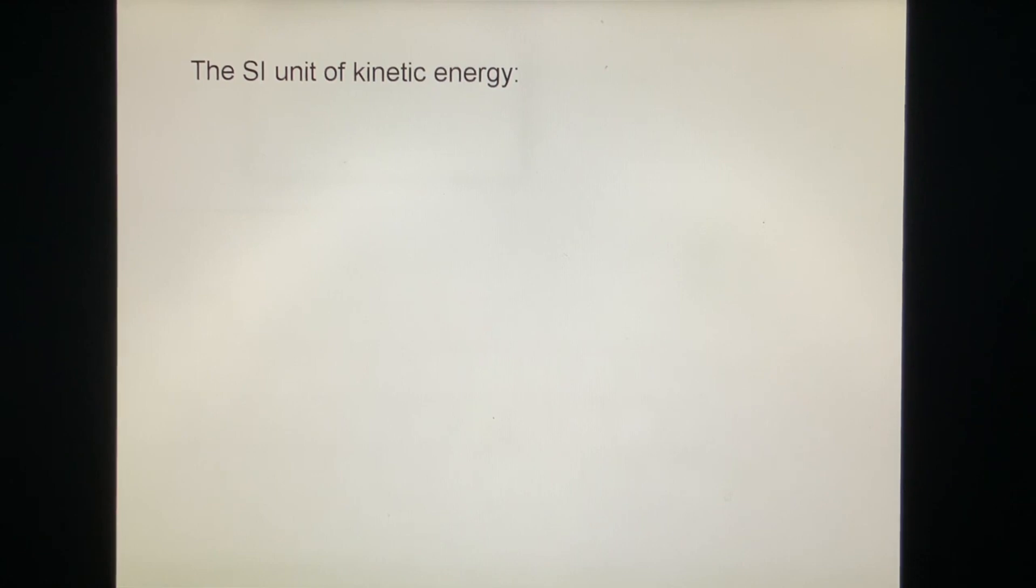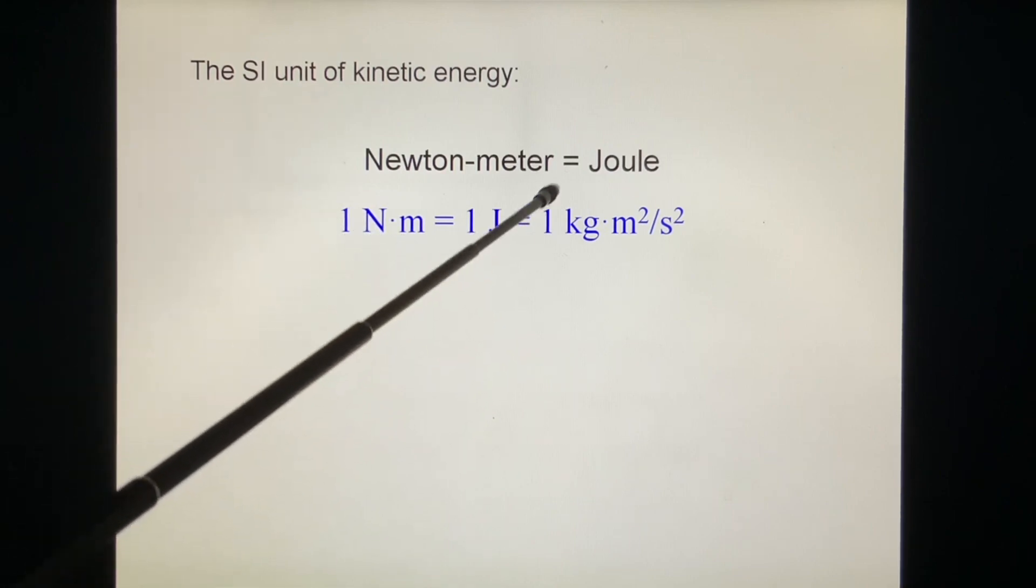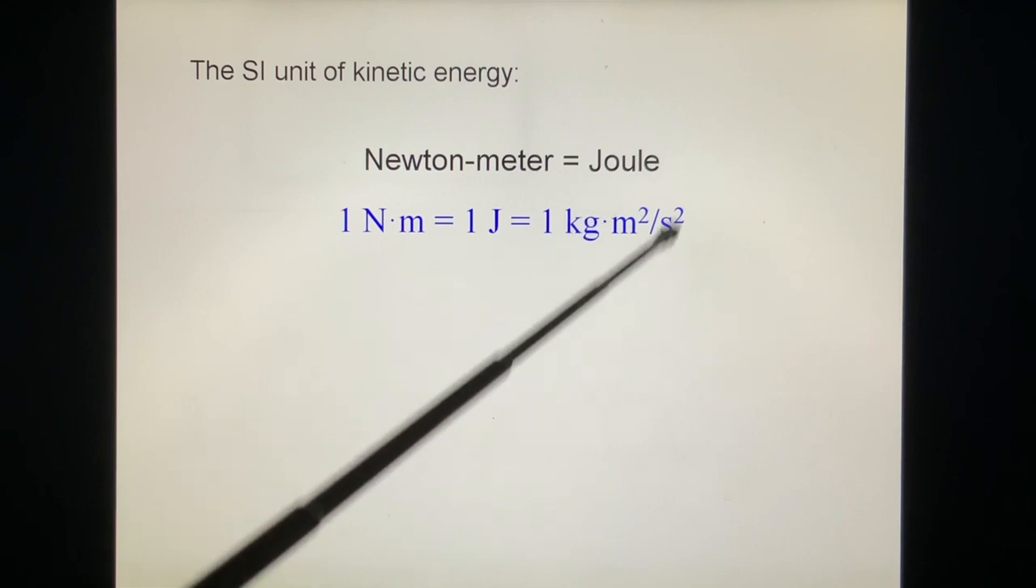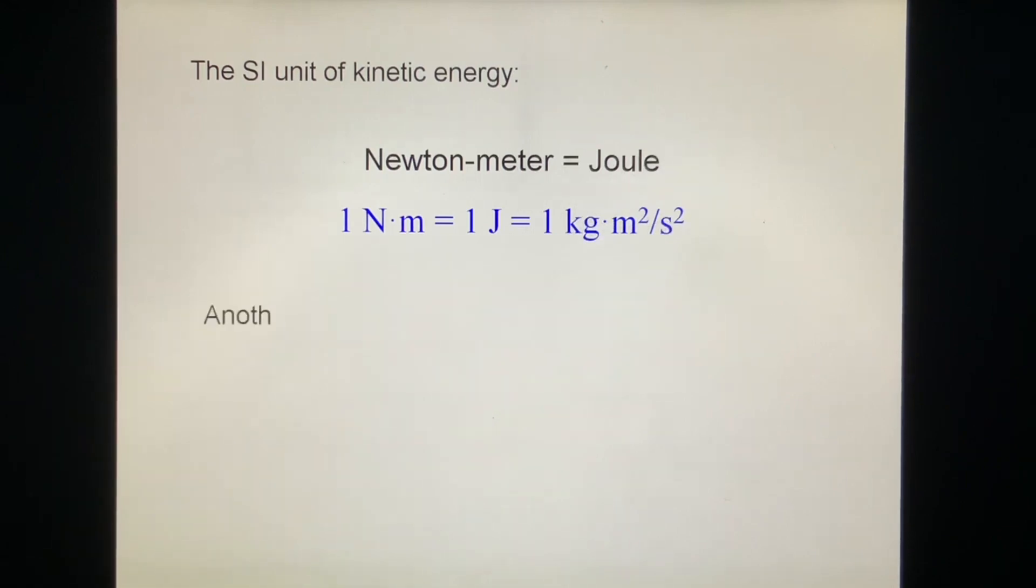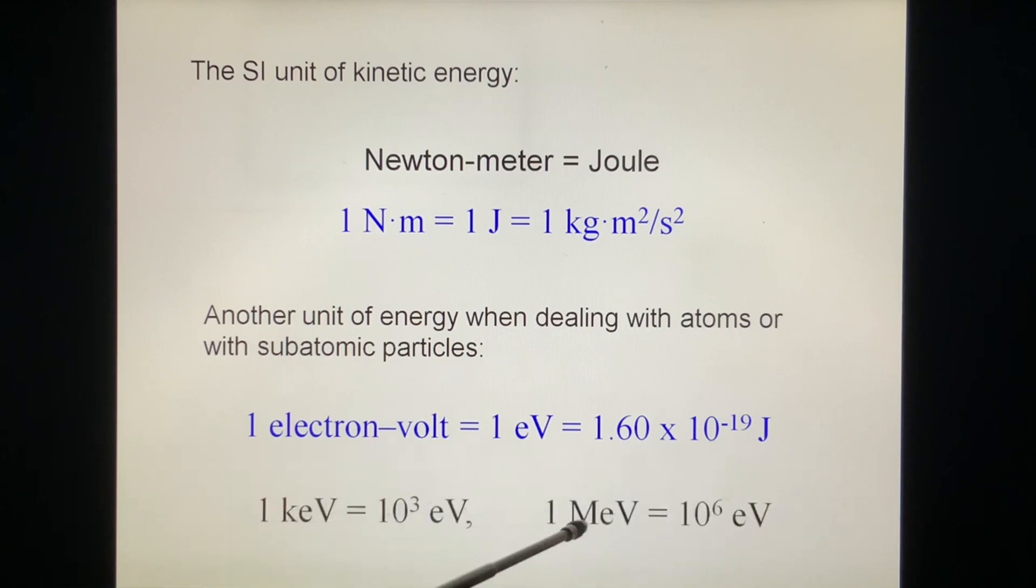The metric system unit of kinetic energy is a newton meter, a joule. One newton meter, one joule equals one kilogram m squared over second squared. Another unit of energy when dealing with atoms or with subatomic particles is electron volt, denoted eV. One electron volt equals 1.60 times 10 to the minus 19 joule. This is a very small unit, so we often use the kilo eV or mega eV.